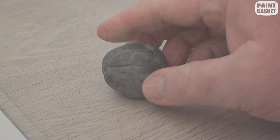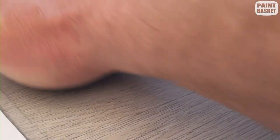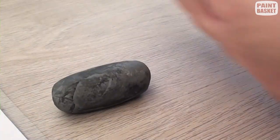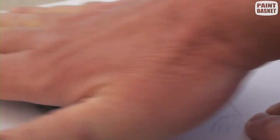For hack number seven, you will ensure that even your transferred sketch lines won't show through in the final drawing. Take your kneaded eraser and roll it out into a sausage shape. You can now gently roll the eraser over your drawing until the sketch lines are barely visible.